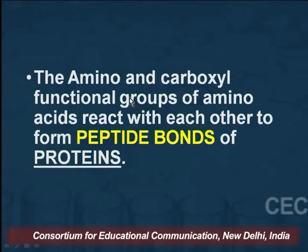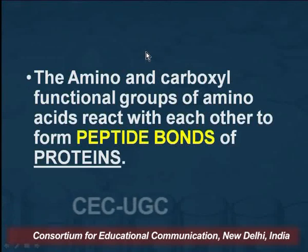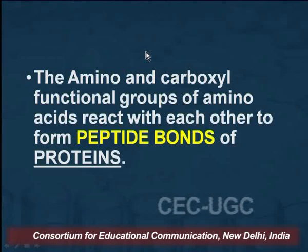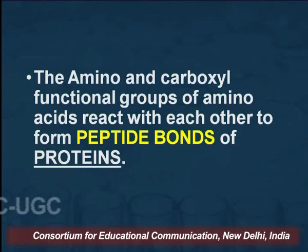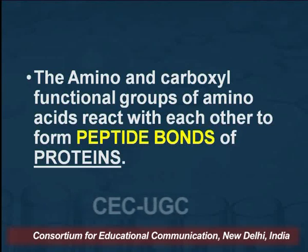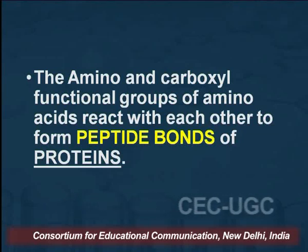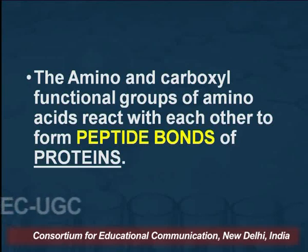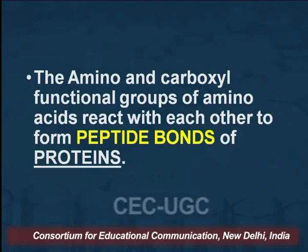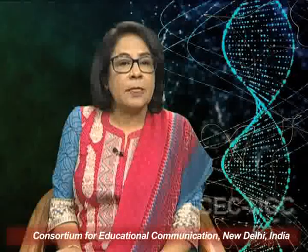Amino groups and carboxylic groups of amino acids react with each other. First, internally: the amino group and the carboxylic group react internally. Second, the amino group of one amino acid may react with the carboxylic group of a second amino acid, or the carboxylic group of the first amino acid reacts with the amino group of the second amino acid, resulting in the formation of a peptide bond.